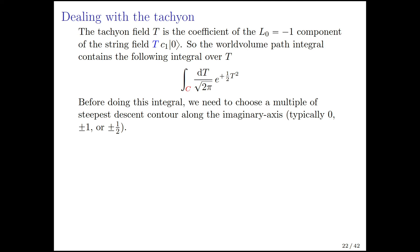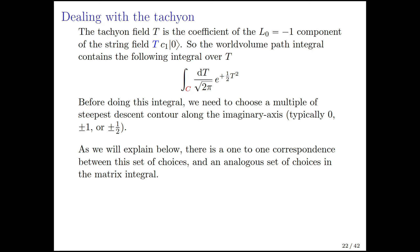Now let's deal with this tachyon. We had this e to the 2 pi t term coming from a state with L0 equals negative 1. It multiplies ghost number 1 field C1 of 0. Capital T is the field. Its path integral contains e to the plus half t squared. To make this integral well-defined, you need to choose a multiple of the steepest descent contour on the imaginary axis. We'll ignore this constant for now as there's an analogous set of choices in the matrix integral. We do this integral from minus i infinity to i infinity, and this i is basically that i in the answer. You remember there was an i in that whole expression for the annulus. We've dealt with the tachyon, and notice that the path integral intuition was useful because it told you you're really dealing with an integral over a negative mass squared field.